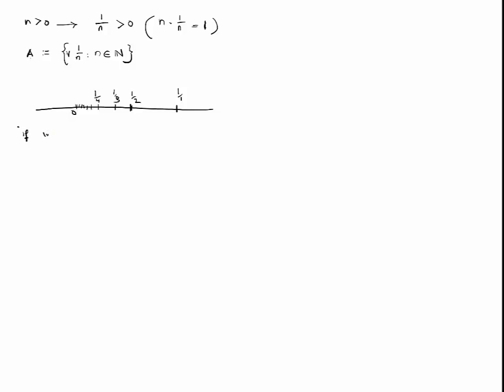Now, the theorem is that the infimum of this set A is 0, and we are going to use proof by contradiction. So, for the purpose of contradiction, let's assume that the assertion that the infimum of A is not equal to 0.